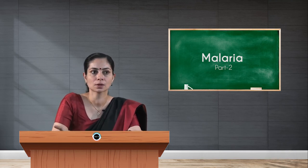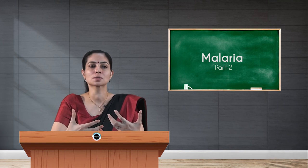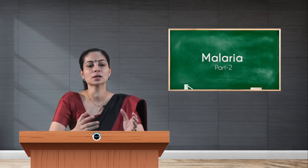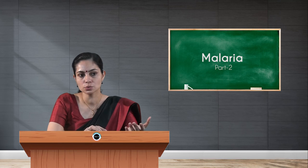The pathogenesis of benign malaria is a triad of febrile paroxysm, anemia, and splenomegaly. Febrile paroxysm depends on species — for Plasmodium vivax and Plasmodium falciparum it is tertian malaria, occurring every third day, corresponding to the RBC cycle. Whenever merozoites rupture the RBC and come out, the patient develops fever in three stages: the initial cold stage with headache, nausea, cold chills, and rigor lasting 15 minutes to one hour; followed by the hot stage with high-grade fever and headache; then the sweating stage lasting two to four hours.